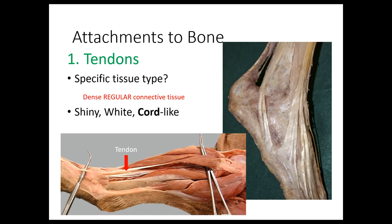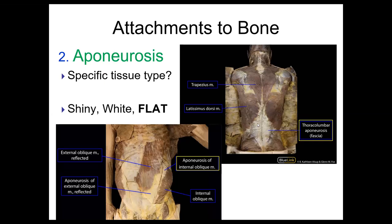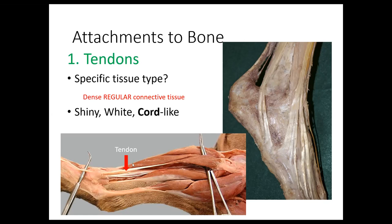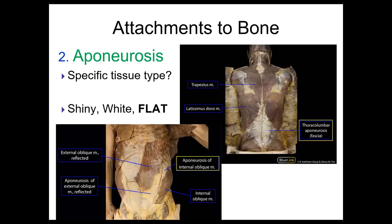Another type of structure that connects muscles to bones is called an aponeurosis. Aponeuroses are just like tendons but instead of being skinny cord-like structures, they're flat sheets. Both are made up of the same tissue type — dense regular connective tissue. As the muscle contracts and pulls on it, the collagen fibers are all oriented in the same direction to resist that force. Here is an example of an aponeurosis.